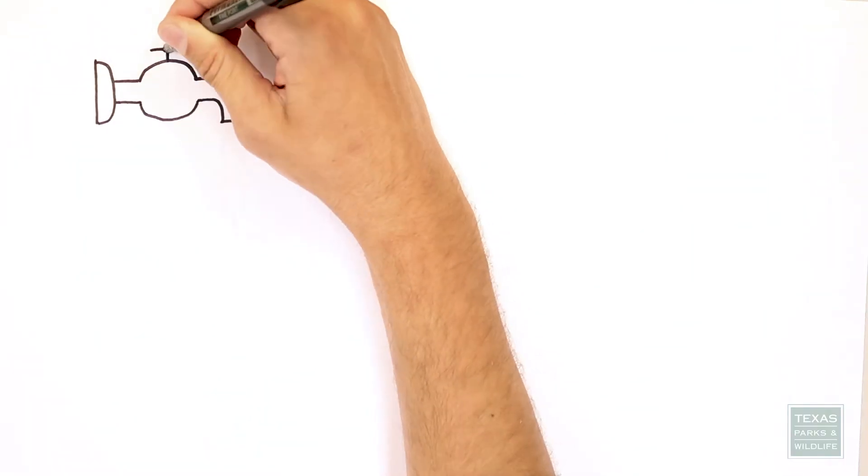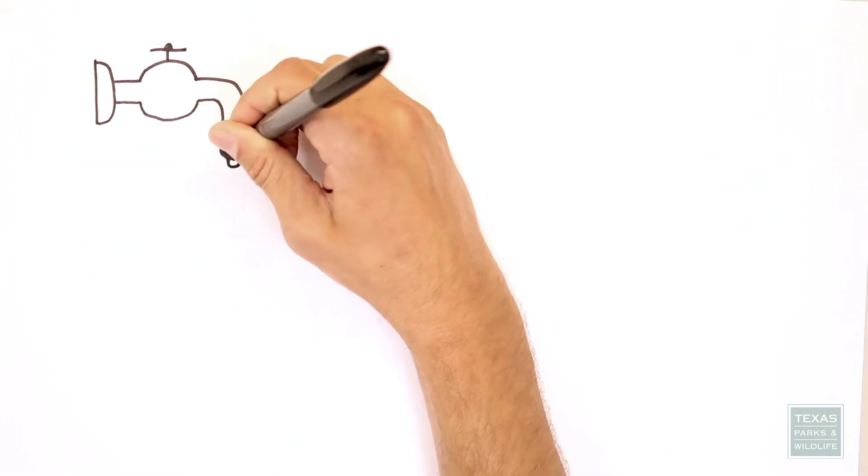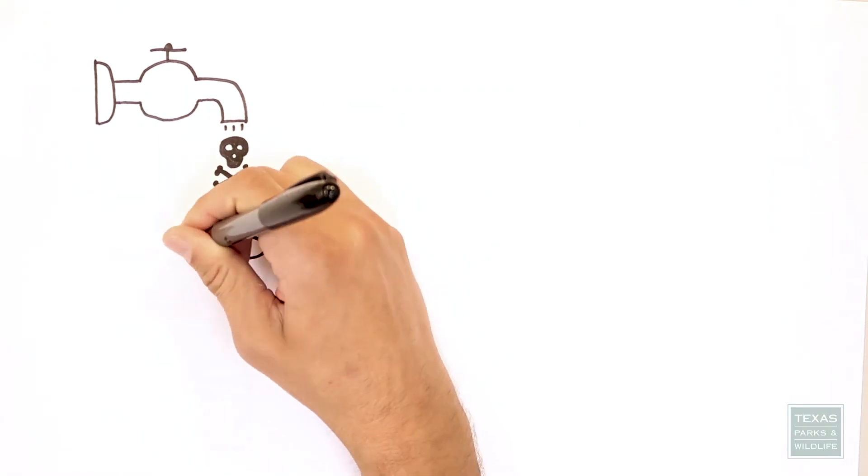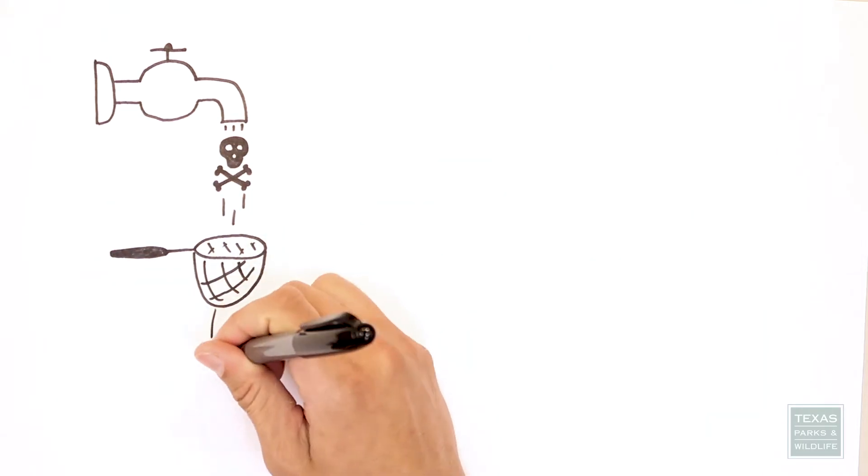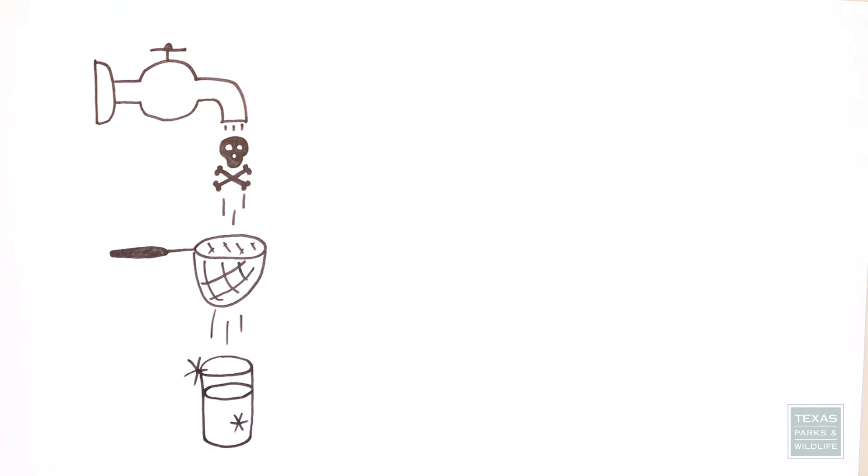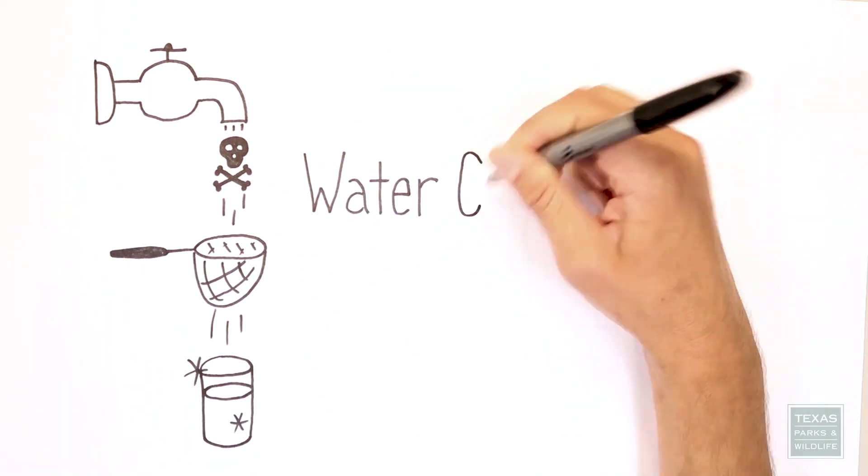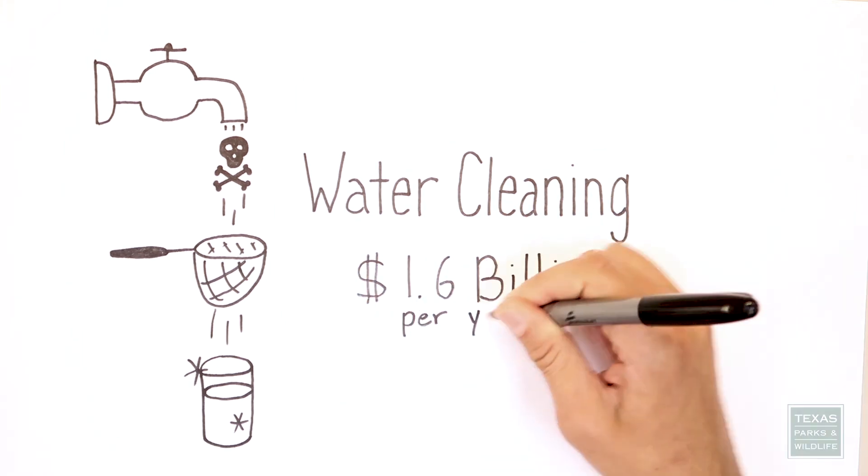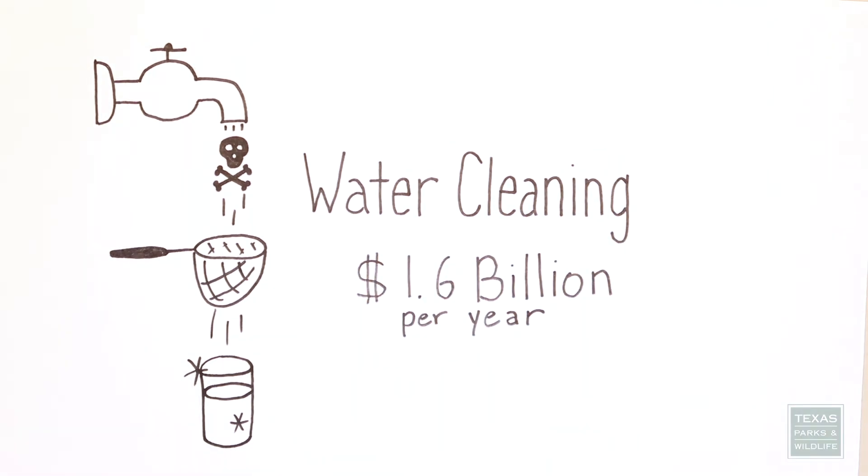Wetlands also act like a huge filter for our water. Within wetlands, there live lots of bacteria and other microorganisms that are continually breaking down matter. In addition to organic matter, wetlands trap oil, nitrogen, phosphorus, sewage, and other pollutants. Wetlands save cities and towns up to $1.6 billion a year in clean up costs to water supplies.